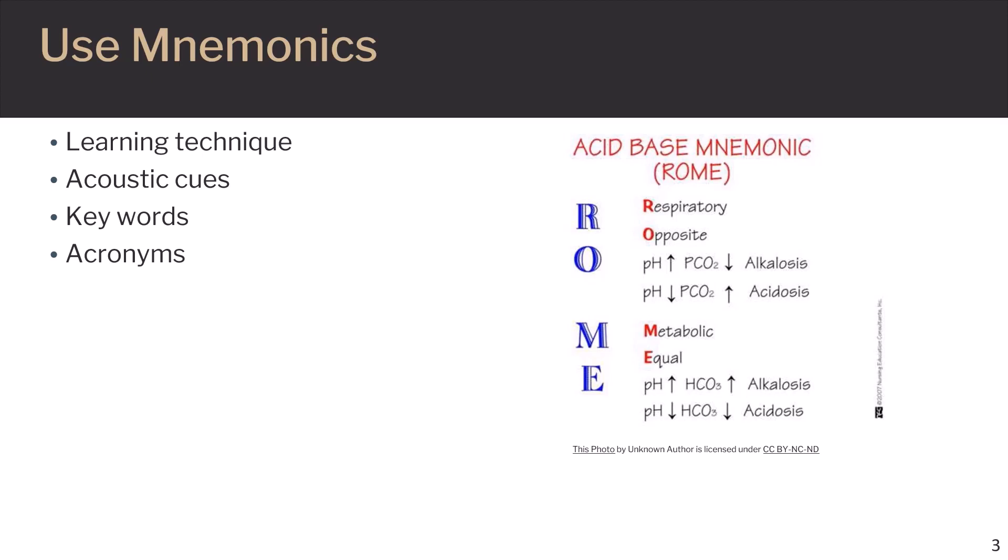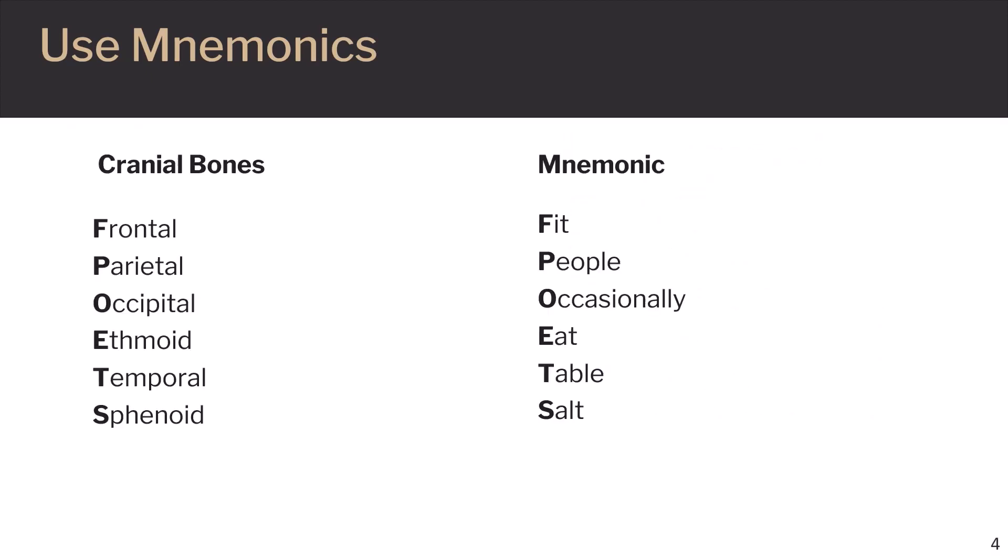Let's look at a few more mnemonics that may be helpful for anatomy and physiology. To create a mnemonic, list the terms that you are learning in the order that you need to memorize them in. Then create a sentence or phrase in which each word begins with the same letter as the term that you are memorizing. The mnemonic may be silly or nonsensical, but the point is to create a mnemonic that you can easily remember. For example, cranial bones: frontal, parietal, occipital, ethmoid, temporal, sphenoid. And a mnemonic may be, fit people occasionally eat table salt.